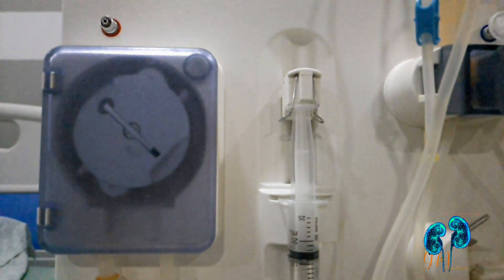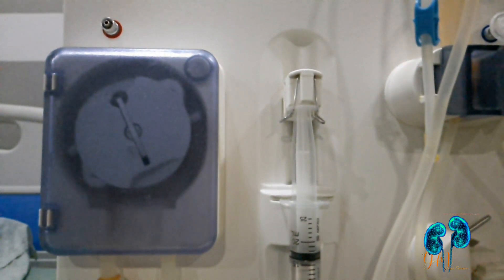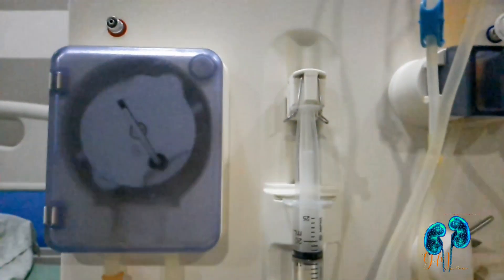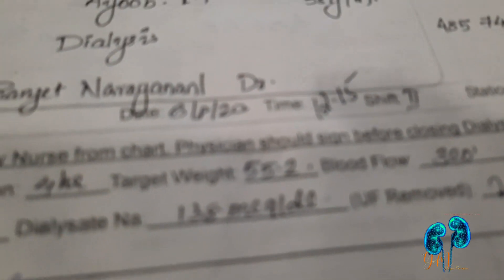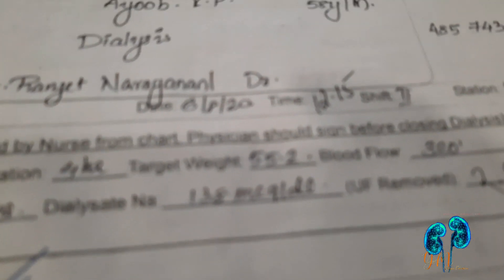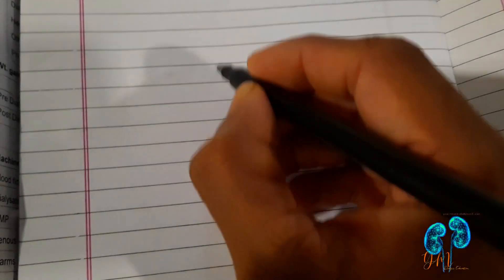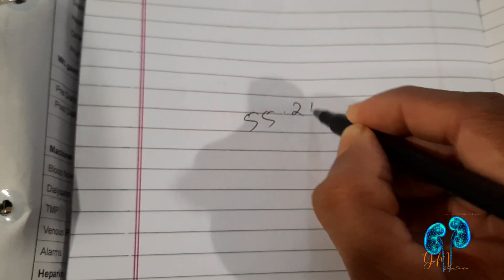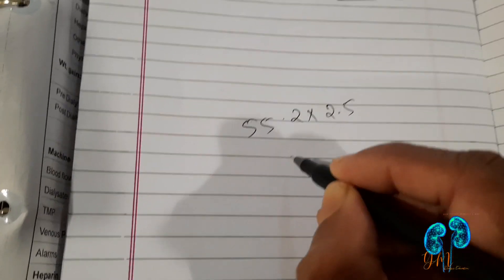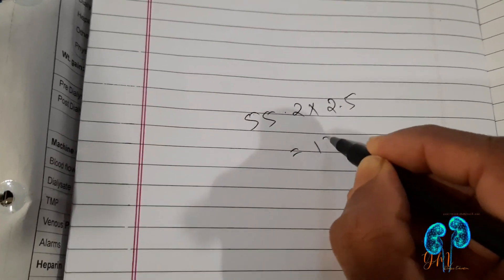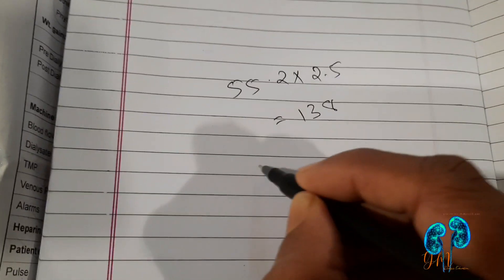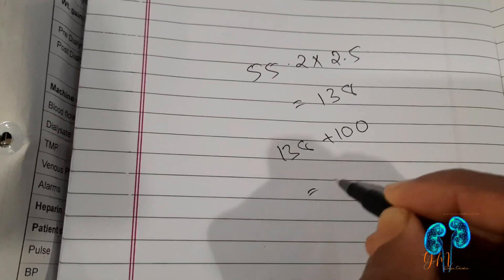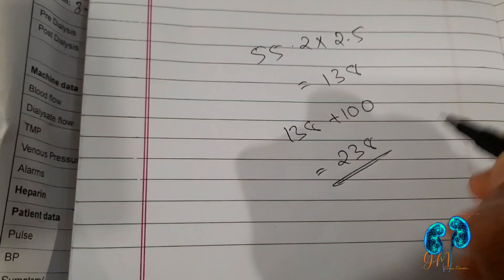Next, we discuss minimum blood flow, calculated using a simple formula based on target weight. With a current weight of 55.2 kg: 55.2 multiplied by 2.5 gives 138, then add 100 to get 238. So 230 ml per minute is the minimum blood flow to maintain.